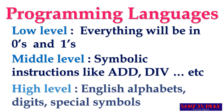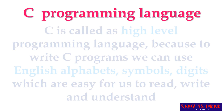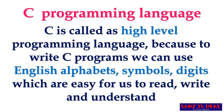The third level is high level language, where we use English alphabets, digits, and special symbols to write the program. C is a high level language because to write C programs we can use English alphabets, symbols, and digits, which are easy for us to read, write, and understand.